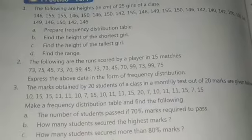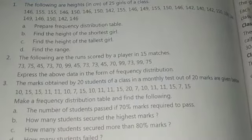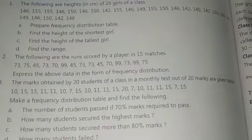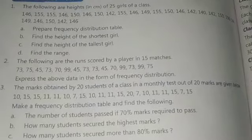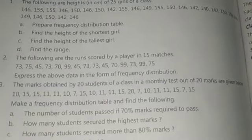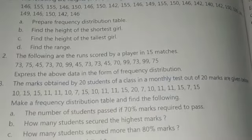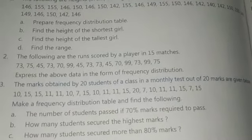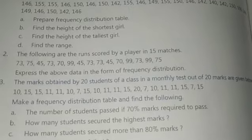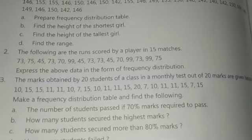Question 3: 20 students of a class scored in a monthly test out of 20 marks. Marks of all 20 students are given. First, you have to make a frequency distribution table with columns: 'Marks', 'Tally Marks', and 'Frequency'.